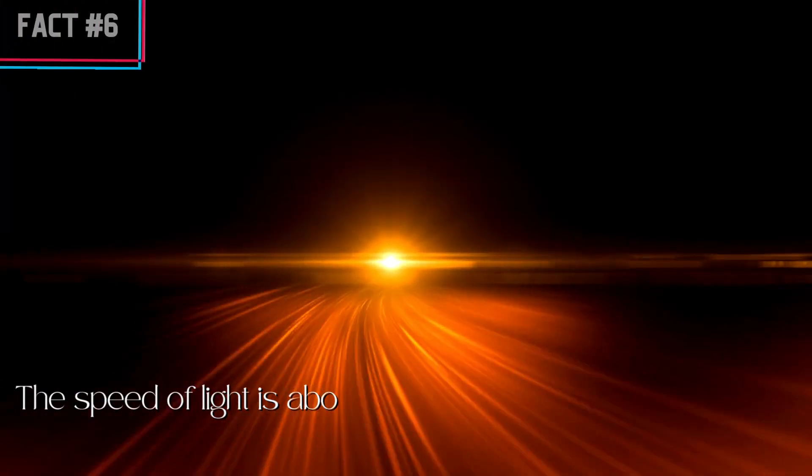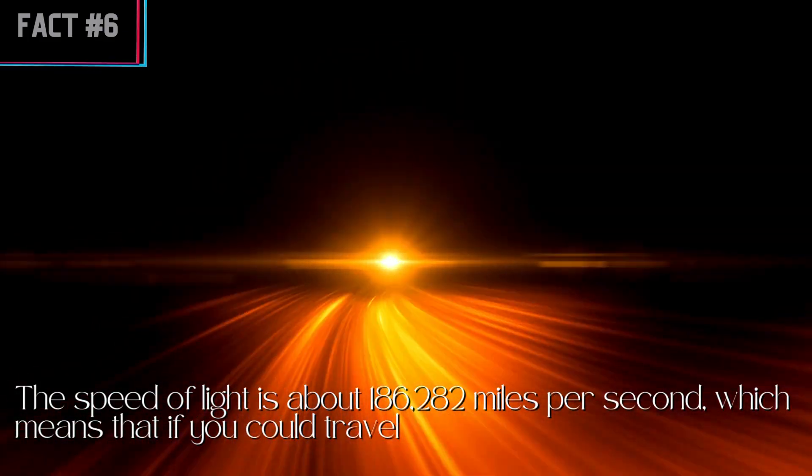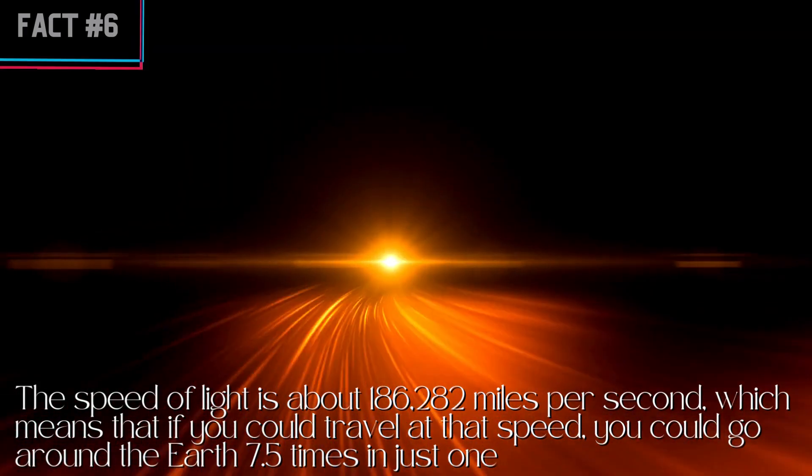Fact number 6, the speed of light is about 186,282 miles per second, which means that if you could travel at that speed, you could go around the Earth 7.5 times in just one second.